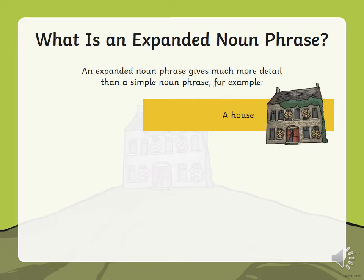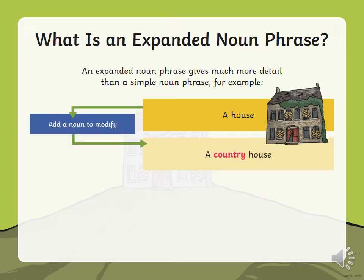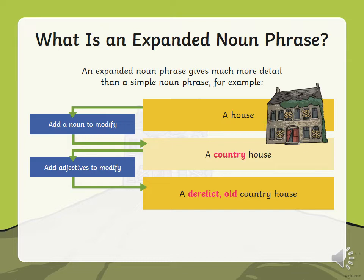Let's have a look at how you can expand a noun phrase. We've got a noun phrase: a house. To expand this noun phrase, you need to add another noun to modify it. So a house becomes a country house — we've added another noun. We now have 'a' and then two nouns: a country house. Now, to make this sentence even better, we add adjectives to the nouns. So we get: a derelict old country house. We've added two adjectives to the noun phrase.